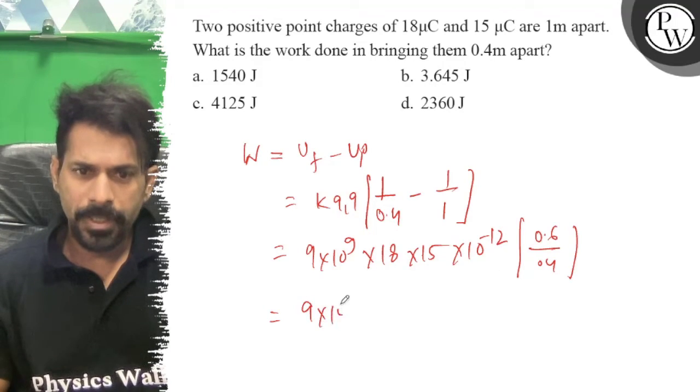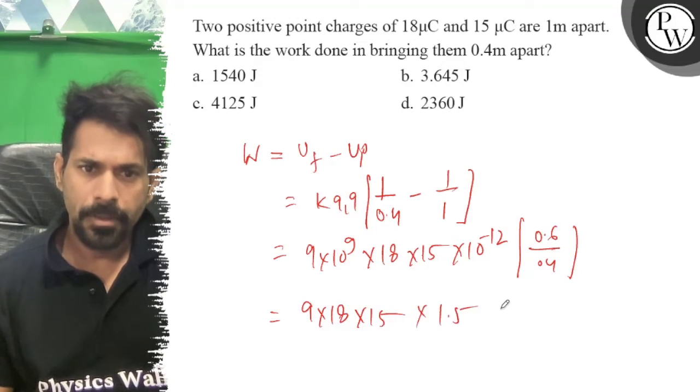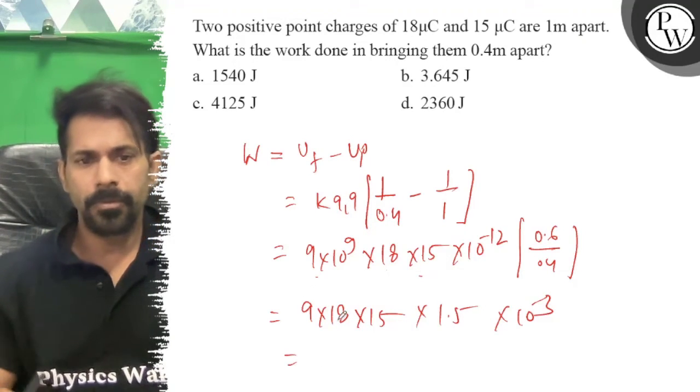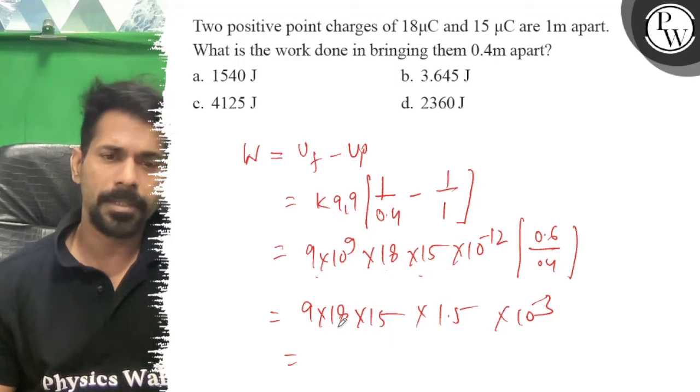10 power of 3 is negative, so 9 into 18, into 15, into 1.5, into 10 power minus 3. That will be equal to 9 into 15.